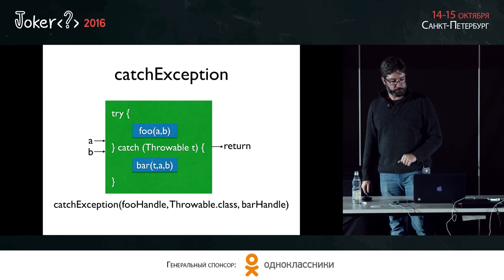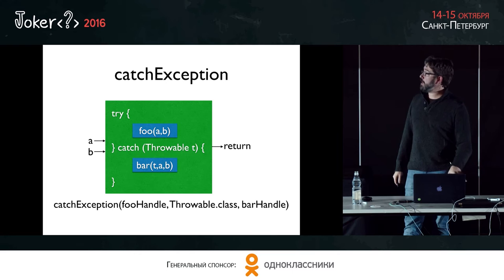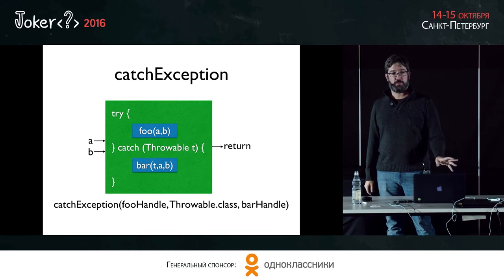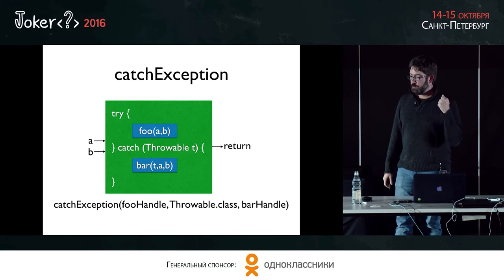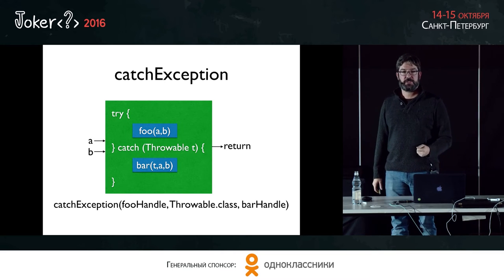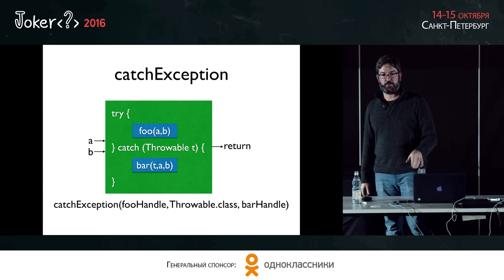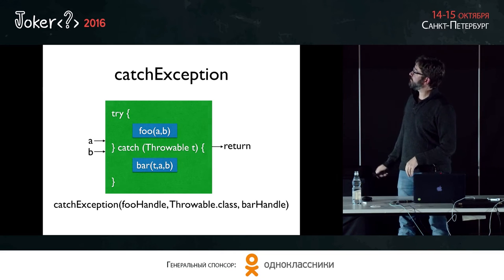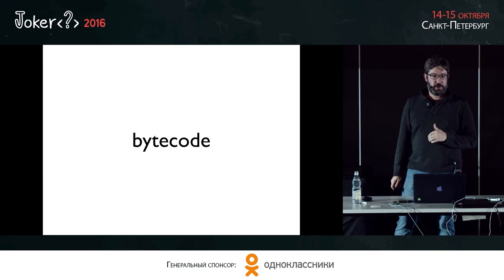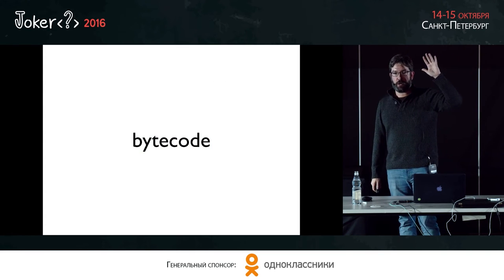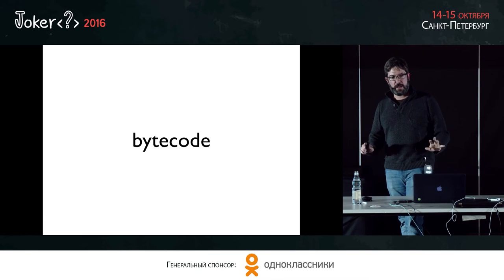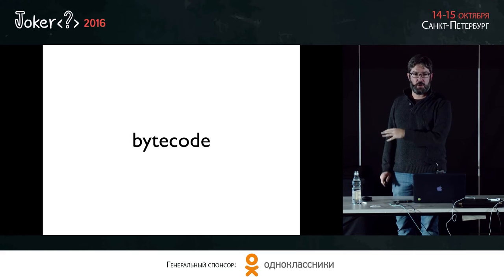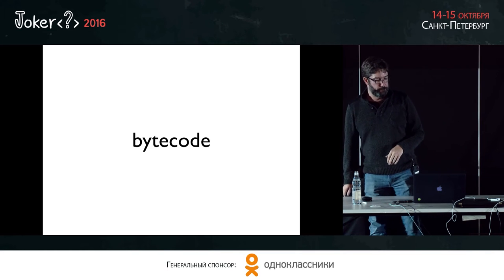That's the method handles API. There's a lot more to explore in there. You can think of it as really smart, really fast reflection — that's basically what it is. Now let's look at the bytecode. How many people have done any work with JVM bytecode? Hopefully nothing I show will be too complicated — I'll walk through the examples.